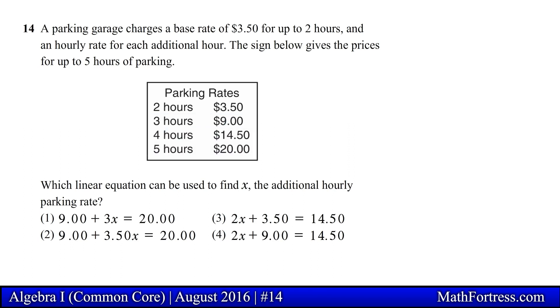We can determine the additional hourly parking rate by taking a look at the prices. The base price for 2 hours is $3.50 and the price for the 3rd hour is $9.00. This is a $5.50 increase from the 2nd to the 3rd hour. The price increase from the 3rd to the 4th hour is also $5.50. The same price also increases from the 4th to the 5th hour. We now know that the hourly parking rate after the first 2 hours is $5.50 per hour.